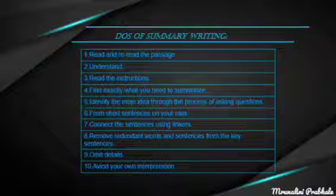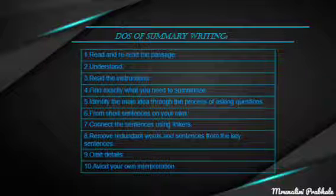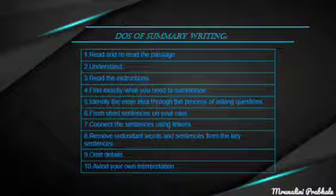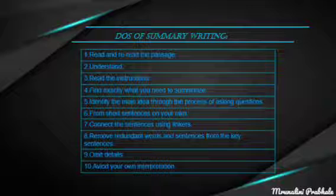The next point is: identify the main idea through the process of asking questions. If after reading twice you still didn't get the central idea, ask yourself questions such as: How would I briefly explain to someone else what this text is about? What is the main idea the author is trying to convey? Does my summary mention the author's original intention? How has the author organized the text? Asking such questions helps you identify the main idea.